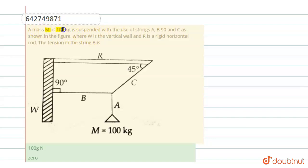A mass M of 100 kg is suspended with the use of strings A, B, and C as shown in the figure, where W is a vertical wall and R is a rigid horizontal rod. The tension in string B is—in this question you have to